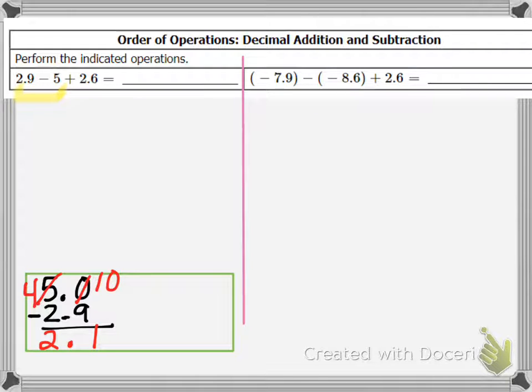But remember, since it was 2.9 minus the number 5, it's actually negative 2.1. So now I have negative 2.1 plus 2.6.